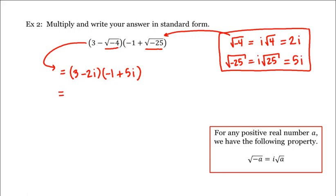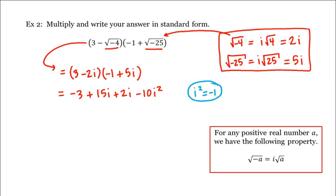And now we can FOIL. This is equal to 3 times negative 1, which is negative 3, plus 3 times 5i, which is 15i, plus negative 2i times negative 1, which is positive 2i, and then negative 2i times 5i, which is negative 10i squared. Again, using the fact that i squared equals negative 1, this is equal to negative 3 plus 15i plus 2i, and then minus 10 times negative 1, which is positive 10.